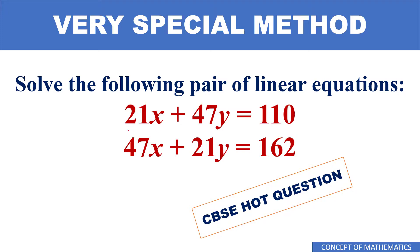So the first equation is 21x plus 47y equals 110, and the second equation is 47x plus 21y equals 162. It's a very hard question for CBSE examination class 10th especially. Welcome to my Concept of Mathematics YouTube channel.